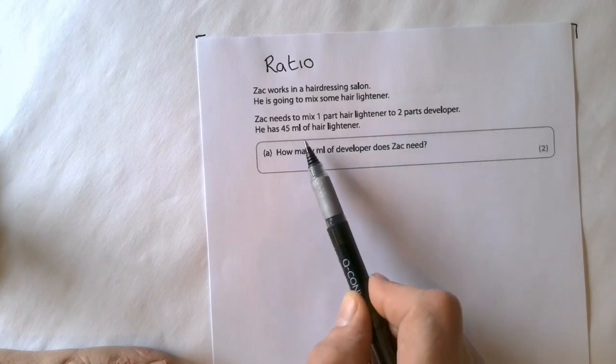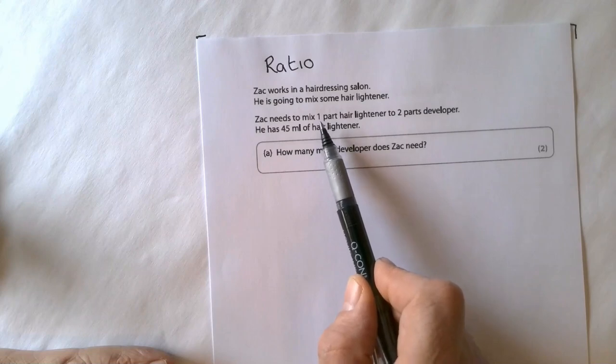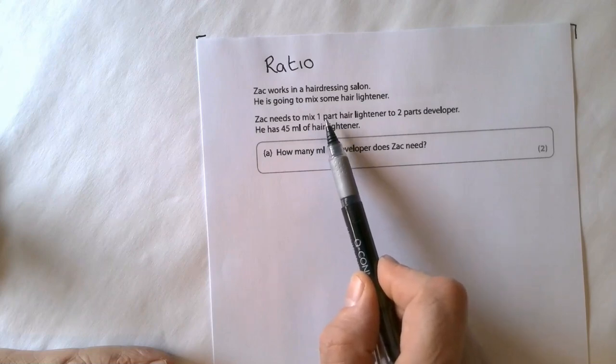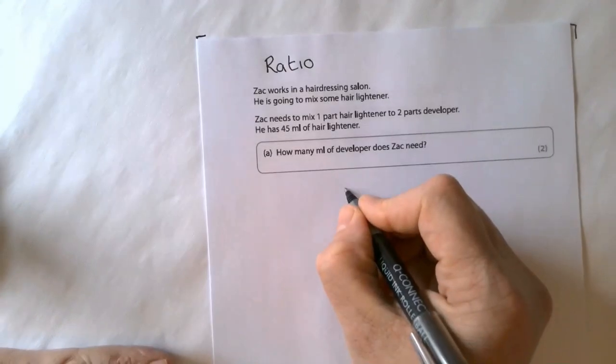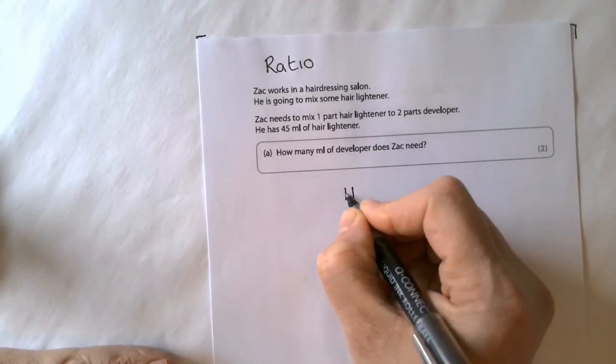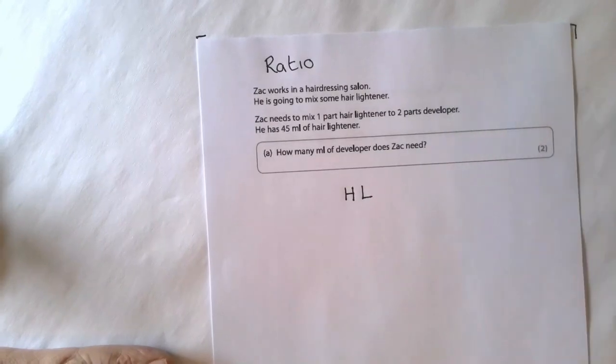He has 45ml of hair lightener. So the important thing here first is to notice which order goes in. So hair lightener becomes first, and then developer becomes second in the ratio.